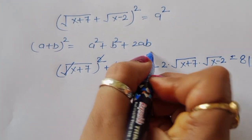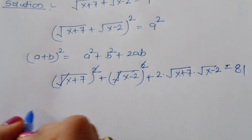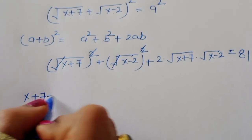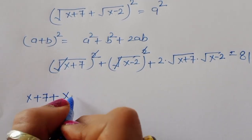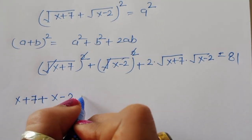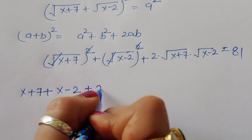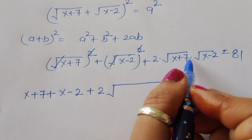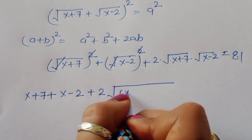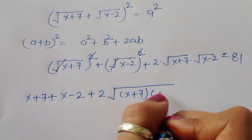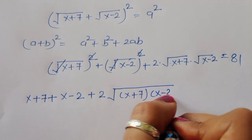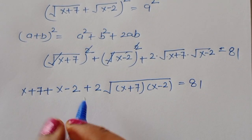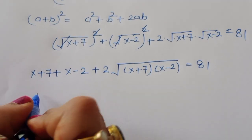Now, √(x+7) whole squared — the square cancels the square root, and same for √(x-2) whole squared. So it becomes (x+7) + (x-2) + 2·√[(x+7)(x-2)] = 81, which gives 2x + 5 + 2·√[(x+7)(x-2)] = 81.